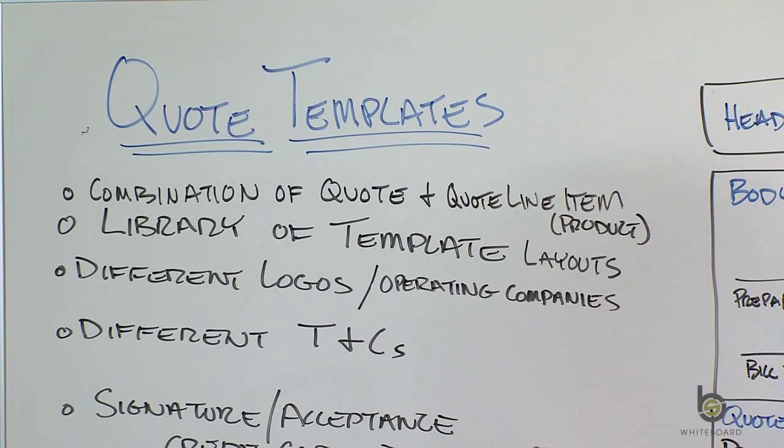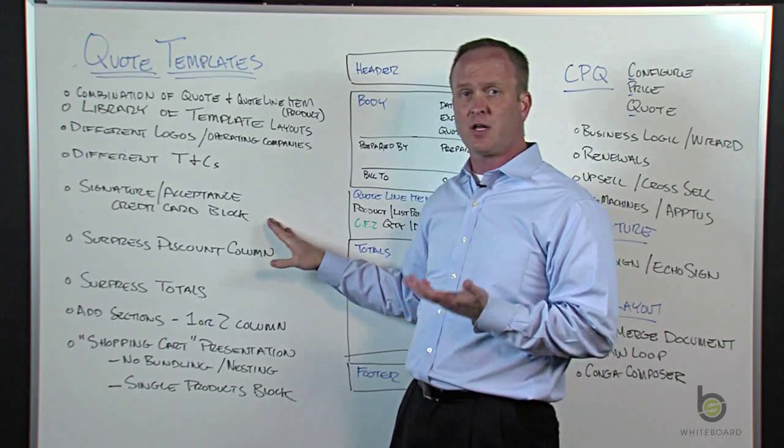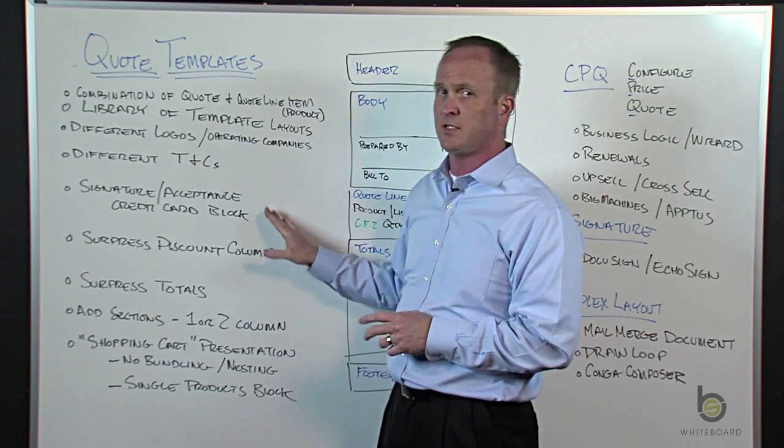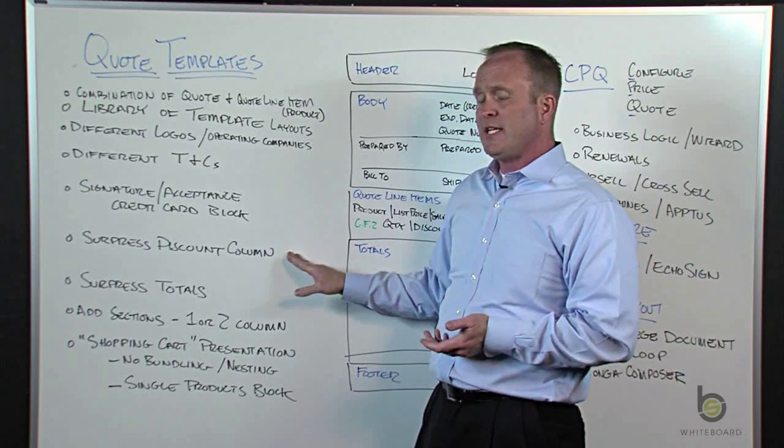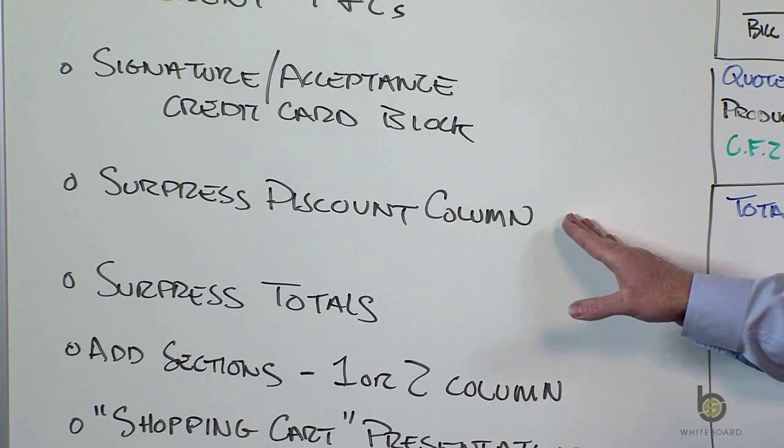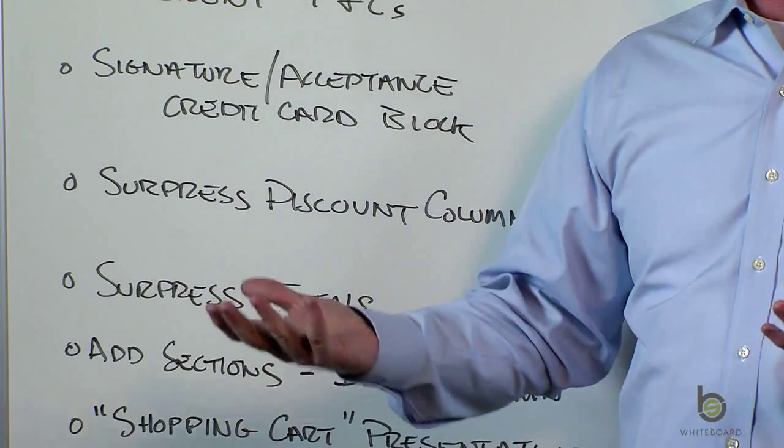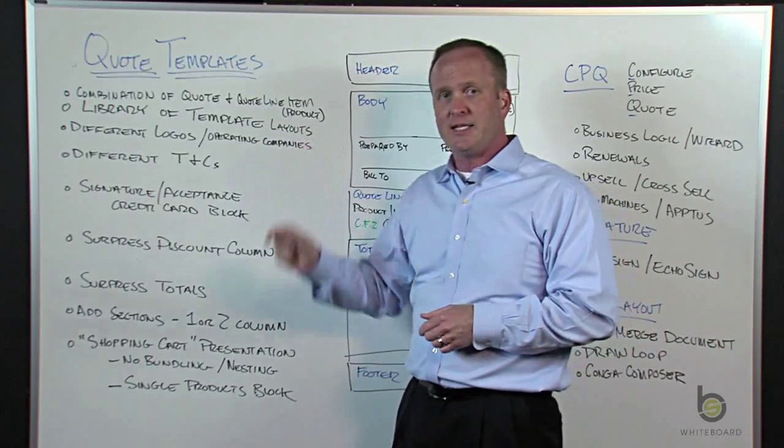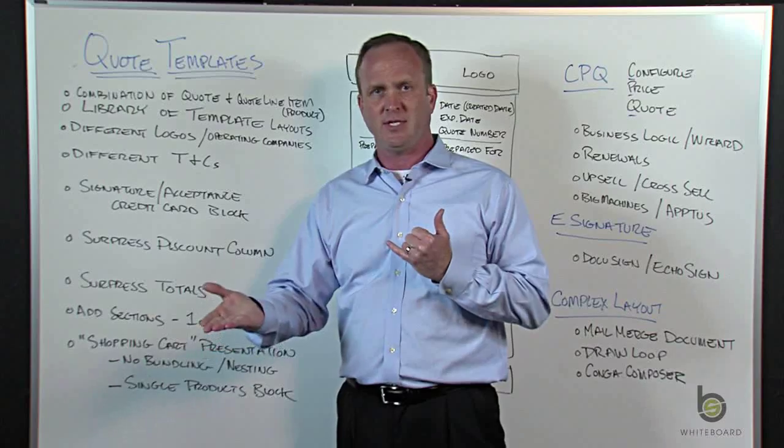So you might have a quote template that has a signature or an acceptance block. Maybe some transactions you want to give a client the ability to fill in their credit card information. You may want to have a template that suppresses the discount column. Some clients may want to see that you are giving them a discount, and some maybe you don't. You don't want to have a blank discount column there and have your customer come back and say, well, where's my discount?